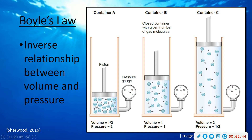Moving to container C, the volume doubles compared to container B — it goes up to two. All the particles now have twice as much room to move around, so pressure is released and cut in half. So Boyle's Law: if temperature is not a factor, if pressure increases, volume had to decrease, and vice versa.